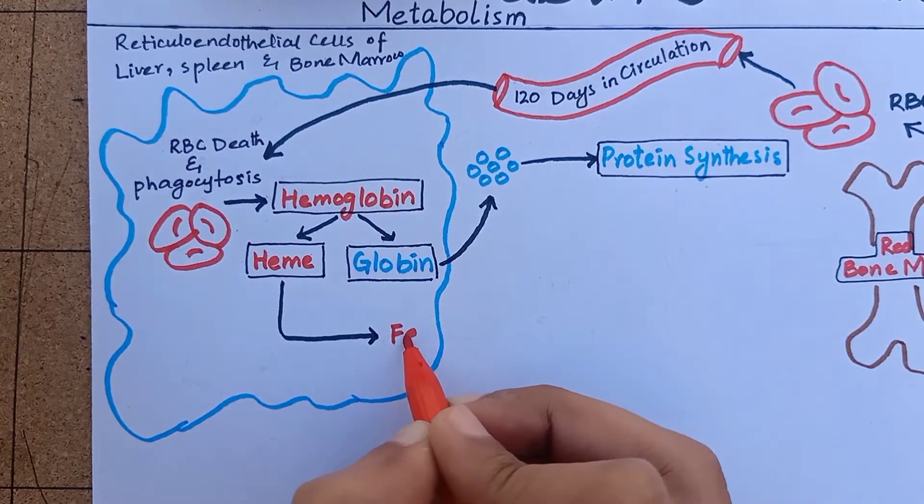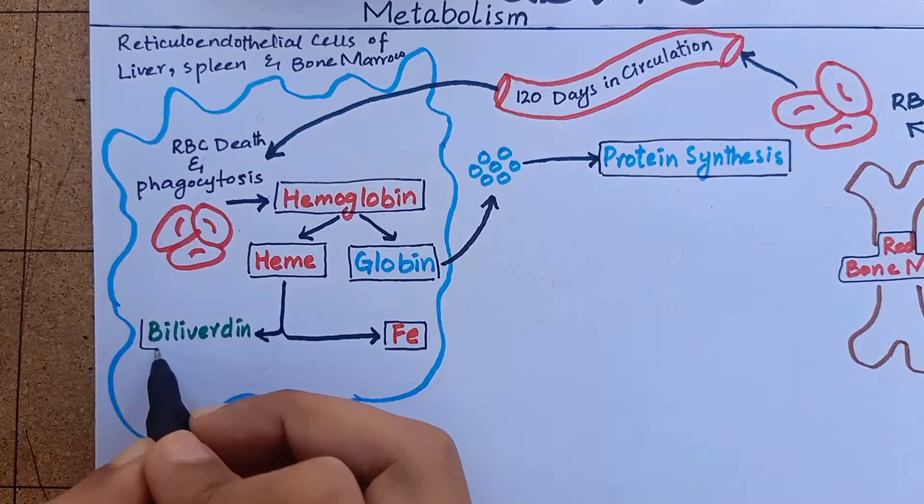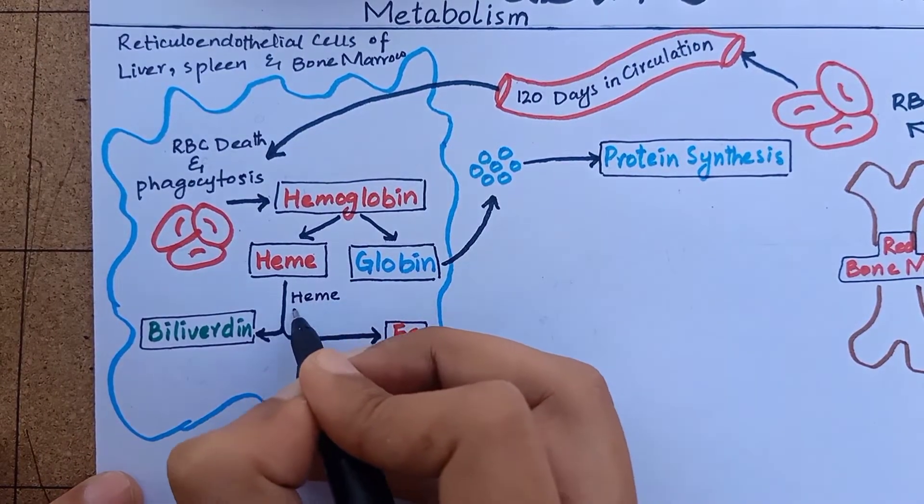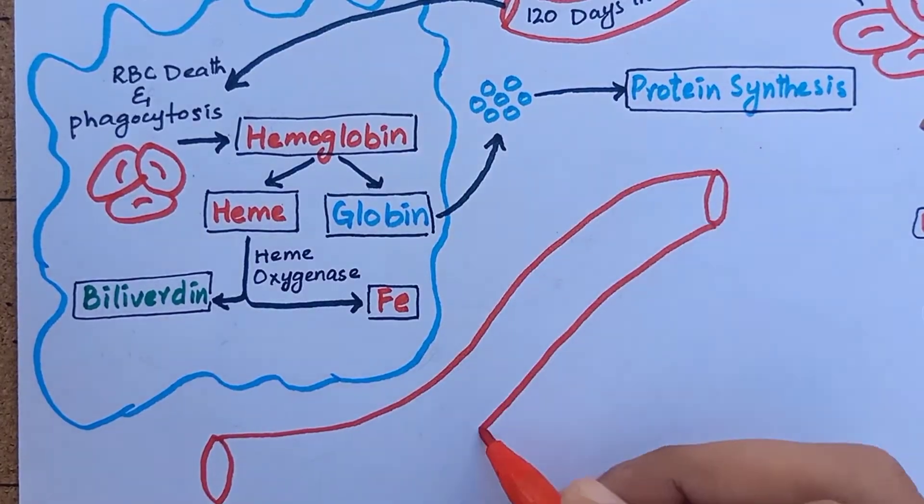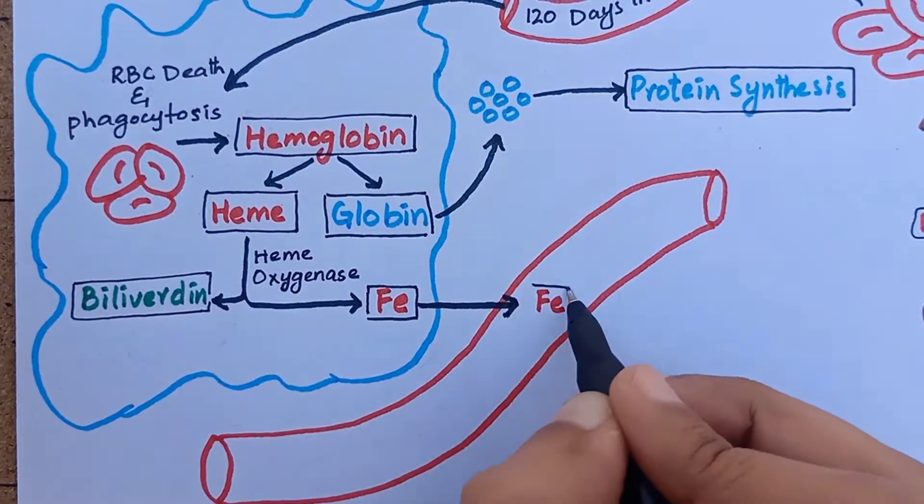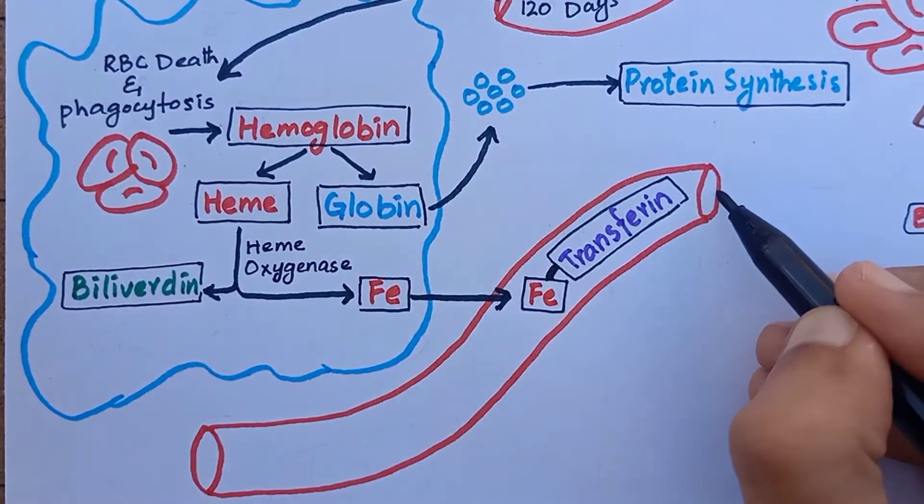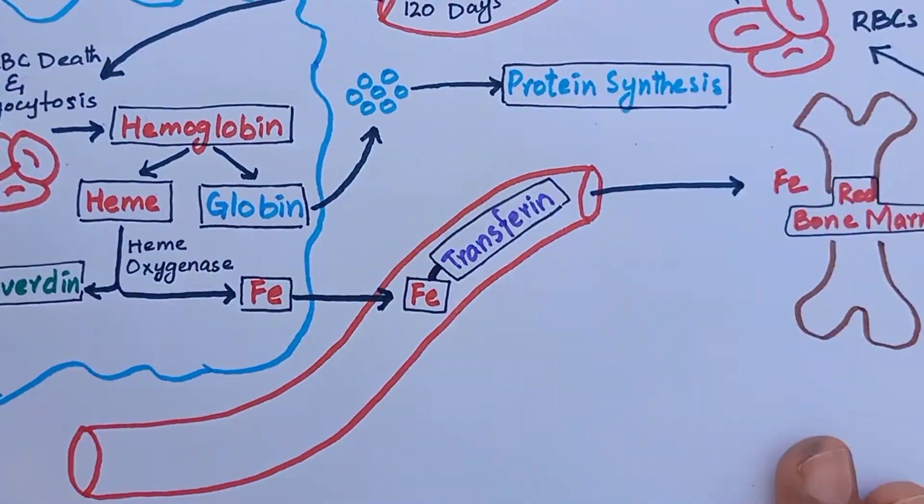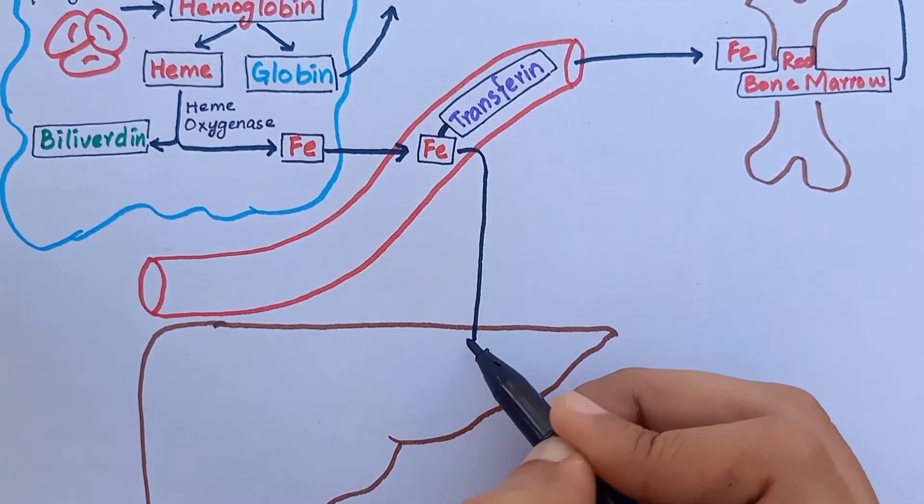Heme undergoes oxidation releasing iron and biliverdin. The process is carried out by heme oxygenase. Iron is passed back into the blood where it binds with transferrin and travels to the bone marrow to be reused for erythropoiesis. It can also be stored in liver as ferritin.